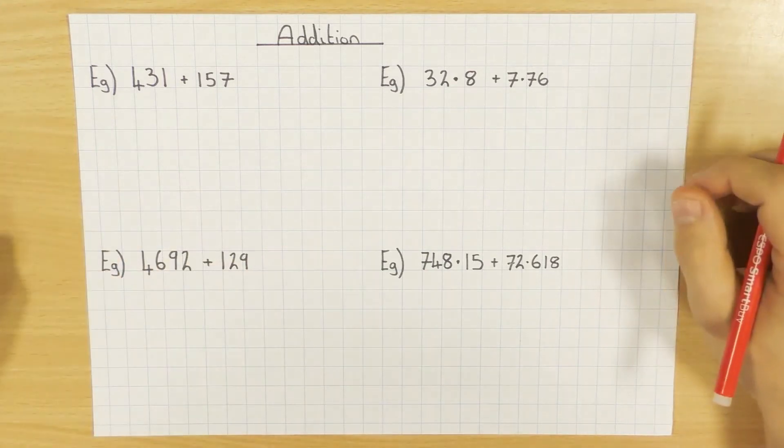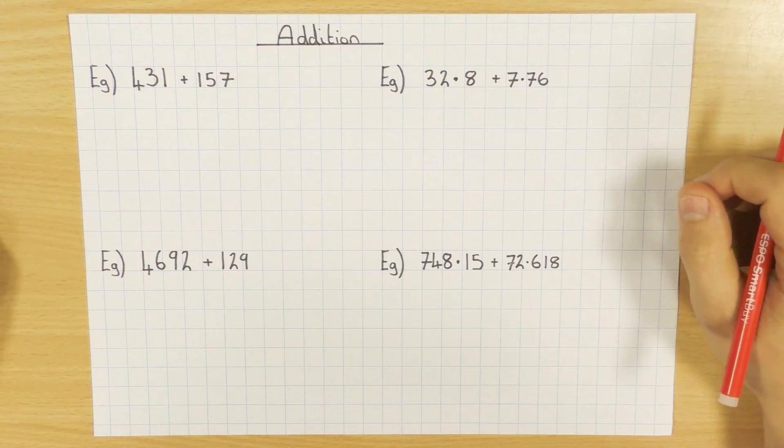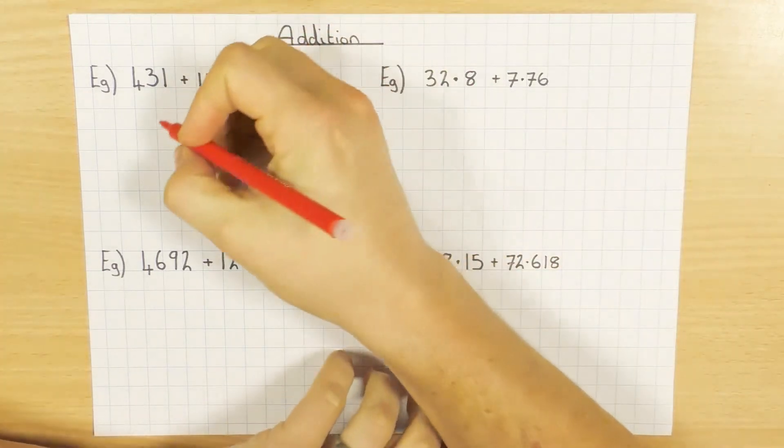So let's get cracking then. I've got four examples here. First one here, 431 plus 157. As I mentioned, we're going to use the column method to do this.